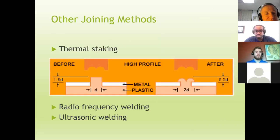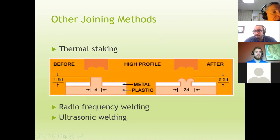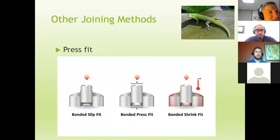Thermal staking is really important for high-volume production of electronics dealing with plastics. It makes a kind of popper — you force the plastic to have a cap and it retains that shape. I also have linkages showing information on radio frequency welding and ultrasonic welding, which are important in many areas including garment production.